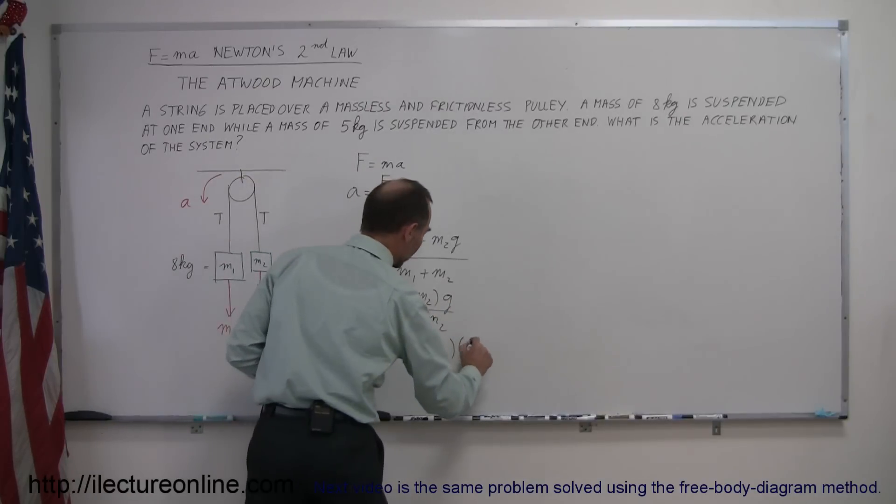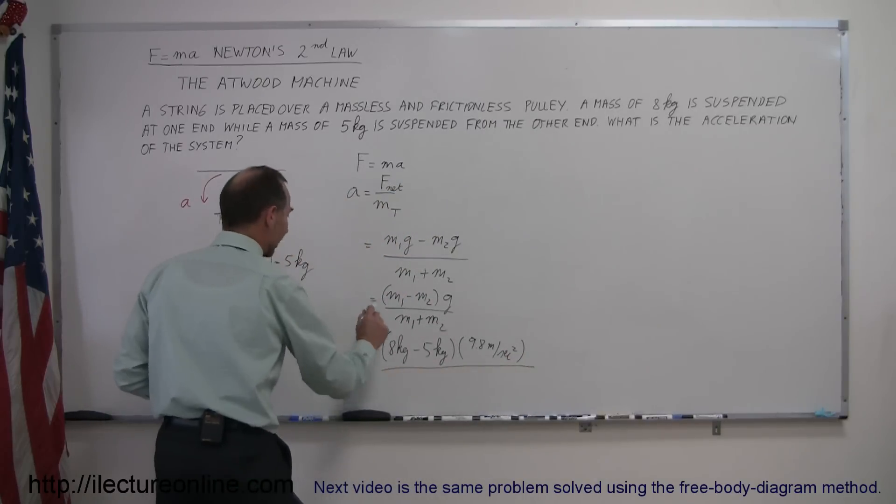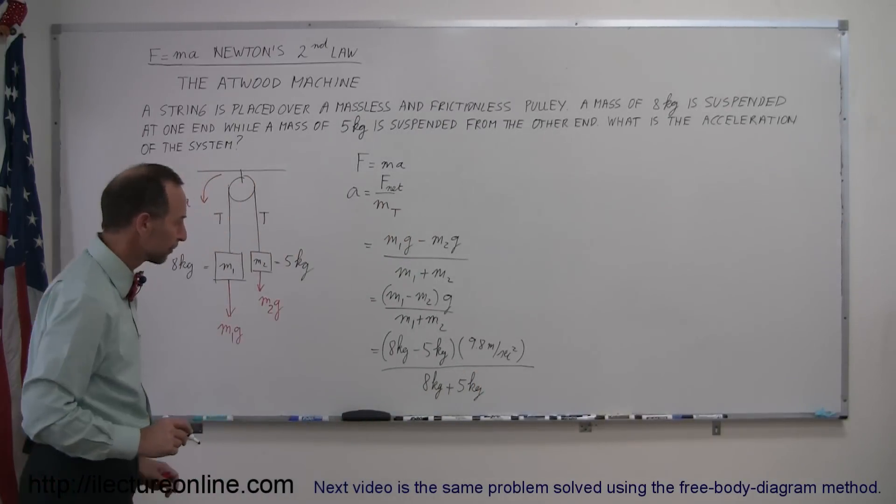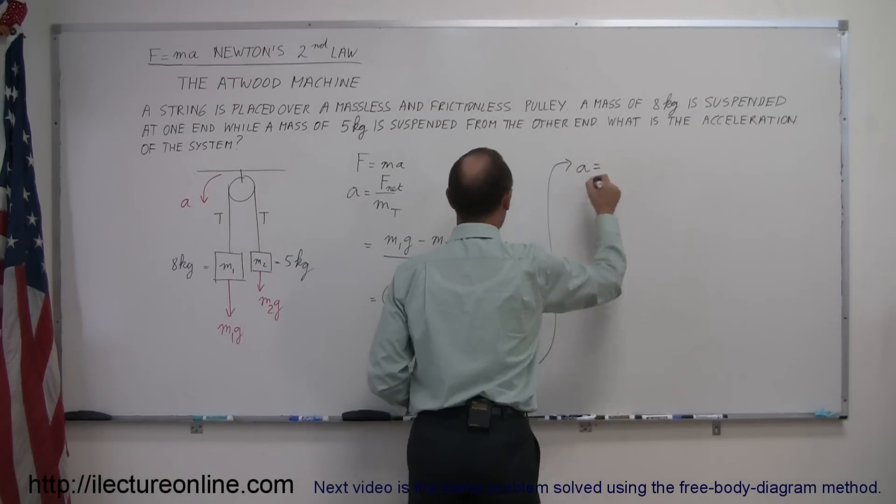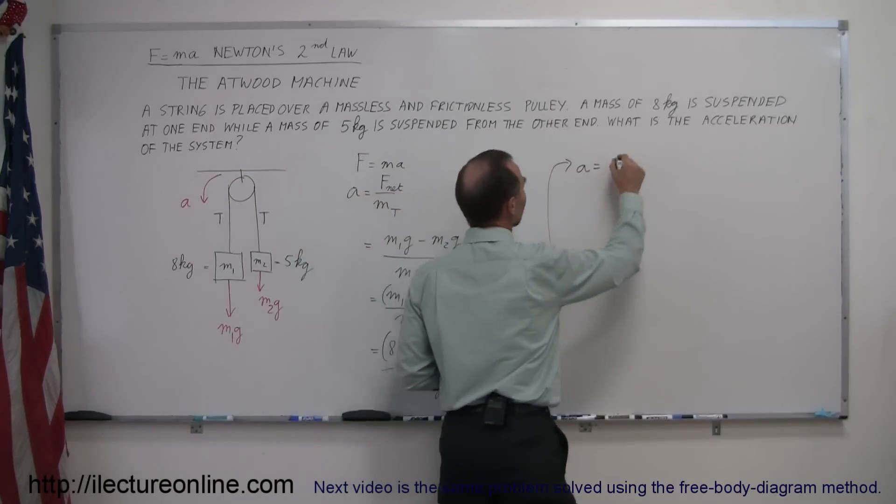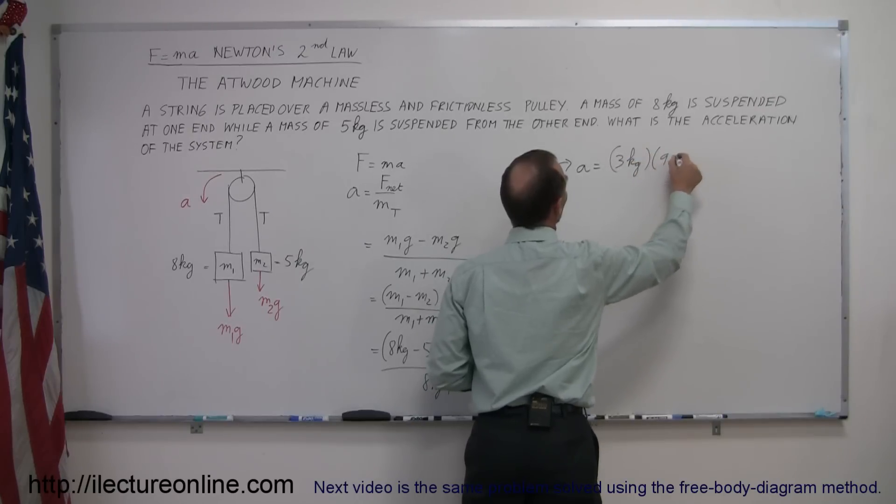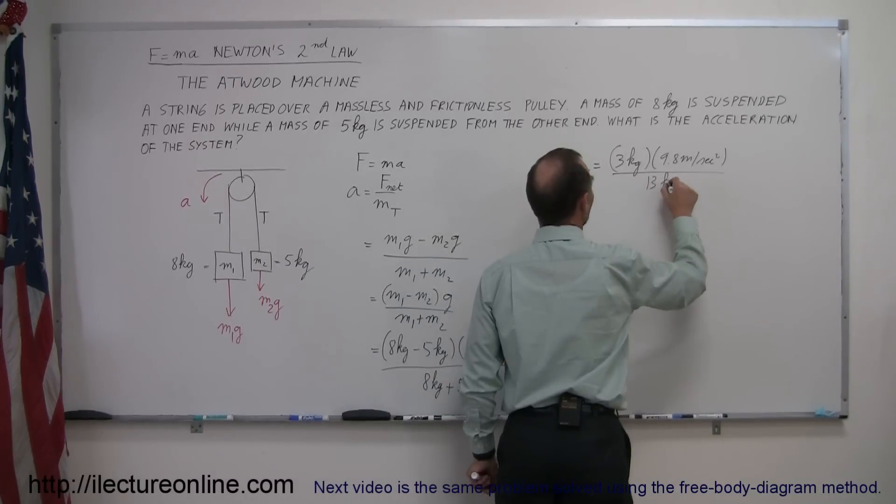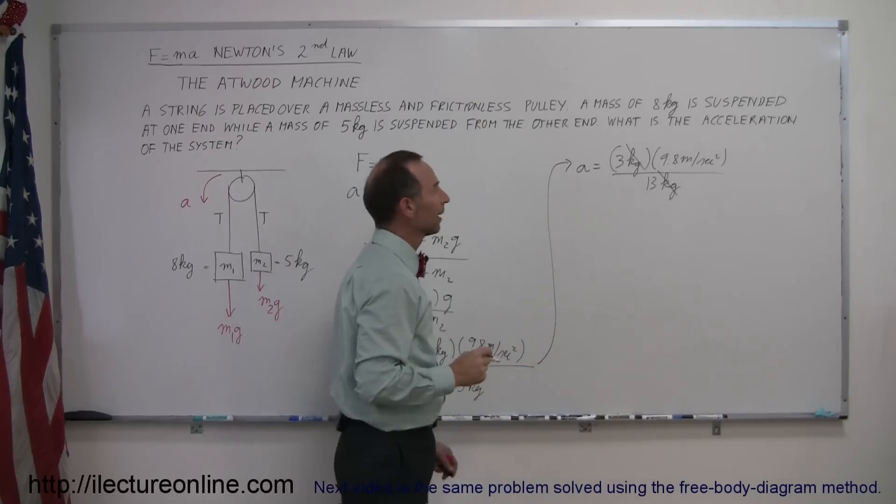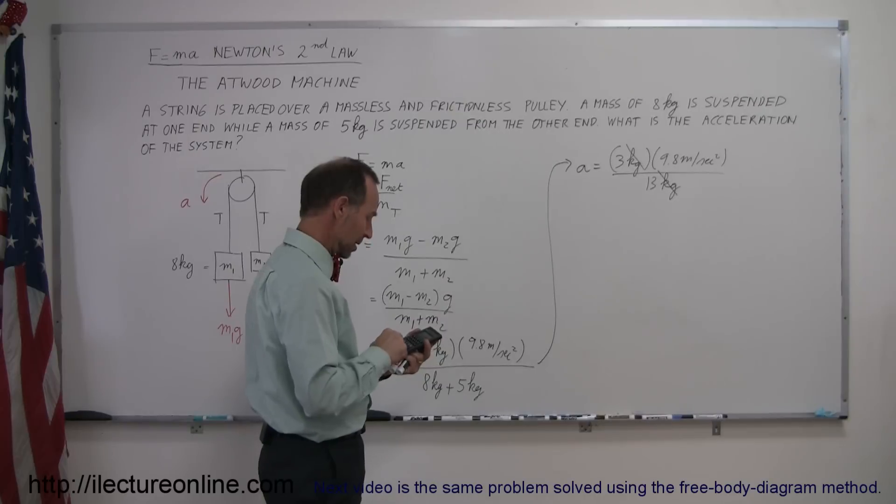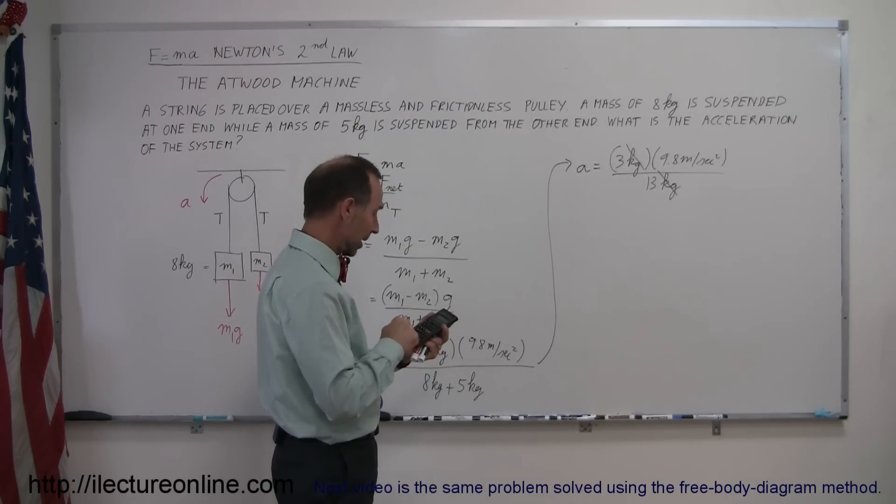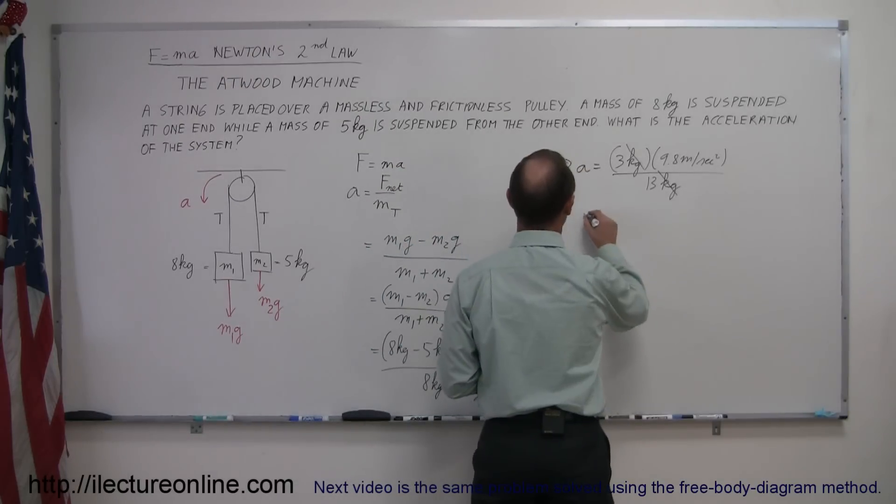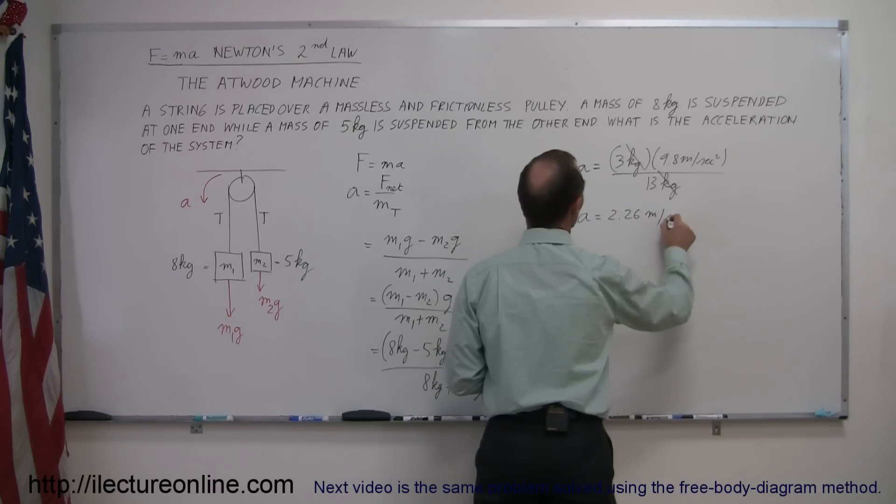Times g, which is 9.8 meters per second squared. And we take the whole thing and divide it by the sum of the two masses, which is 8 kilograms plus 5 kilograms. We can go ahead then and simplify it a little bit more. So we have the acceleration is equal to, 8 minus 5 is 3, so that gives us 3 kilograms times 9.8 meters per second squared. In the denominator, we have 8 plus 5, so that gives us 13 kilograms. Notice that the kilograms cancel out. And now we grab our calculator. So we have 3 times 9.8 divided by 13 equals, and so we get 2.26 meters per second squared.